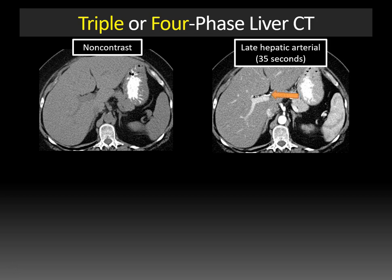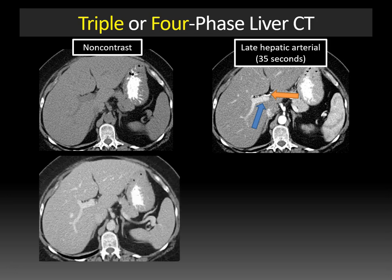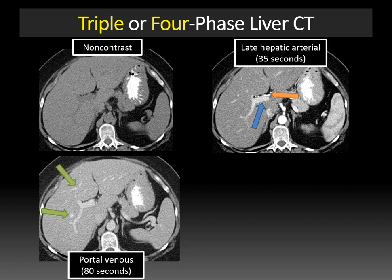During the late hepatic arterial phase, you'll see the hepatic artery enhancing — denoted by the orange arrow — and the portal vein, shown by the blue arrow, should be homogeneously enhancing. After that, we have the portal venous phase, which occurs at about 75 to 80 seconds after contrast injection. You'll still see portal vein enhancement, but then hepatic vein enhancement begins, and the parenchyma demonstrates more robust enhancement.